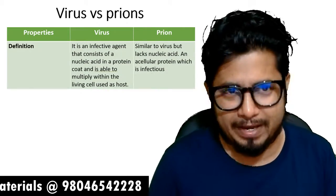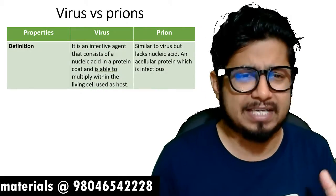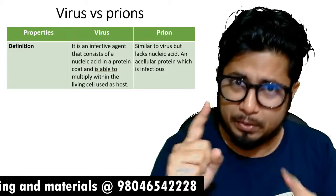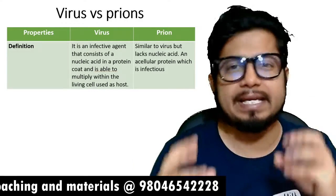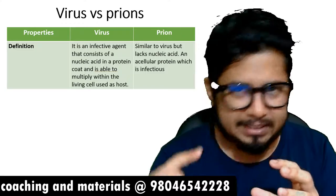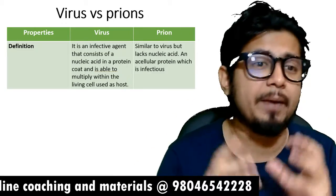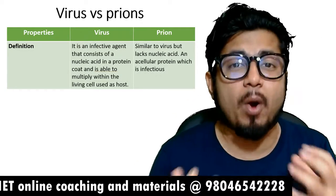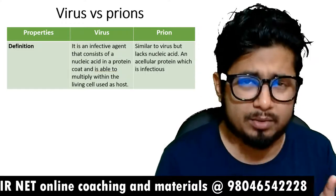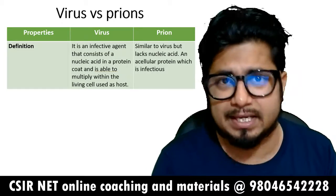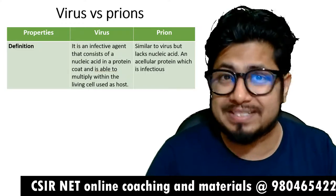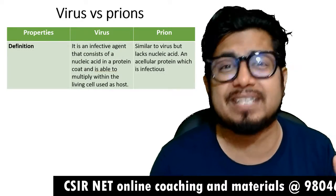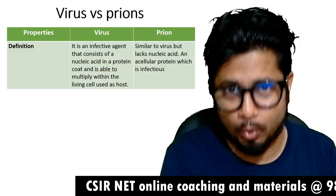The first thing is the definition of virus and prions. A virus is an infective agent that consists of nucleic acid as well as protein. It carries a nucleic acid covered by a protein coat or capsid, and they can multiply only within a living host, so they are known as obligate intracellular parasites — they can only grow inside a cell.